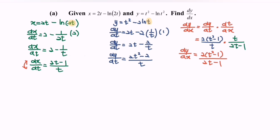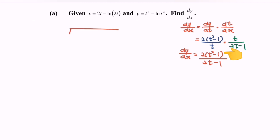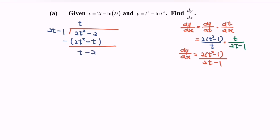Notice that this is an improper fraction, so use long division to simplify. Dividing 2t squared minus 2 by 2t minus 1: the first term is t, giving 2t squared minus t. Subtracting gives t minus 2. Then multiply by plus 1/2 to get t minus 1/2. Simplifying: t minus t equals 0, and negative 2 plus 1/2 gives negative 3/2.